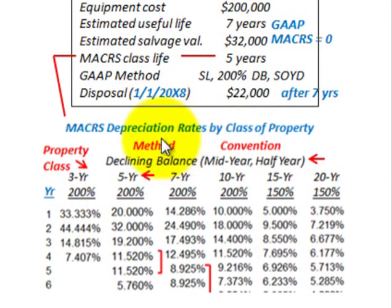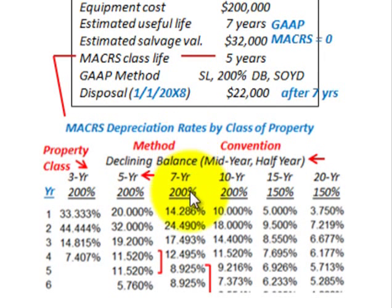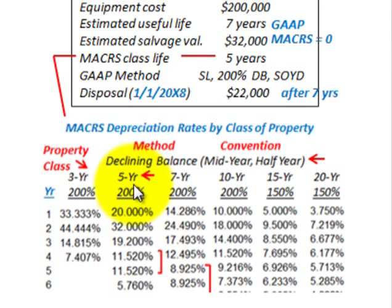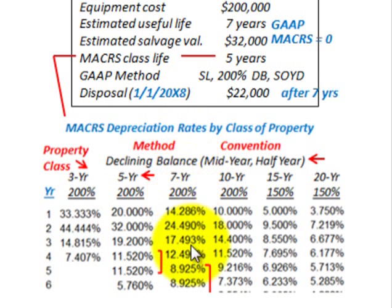Before we get into our depreciable amounts, when we're using the MACRS system, we have to refer to tax tables that the IRS puts out. Our property class in this case is 5 years of life on that equipment. The method we're using is declining balance, and there's a convention — it's the mid-year or half-year convention. We refer to the IRS tax table for the property class, method, and convention.